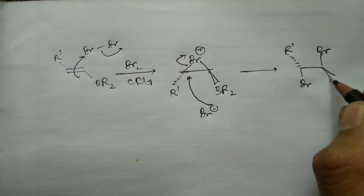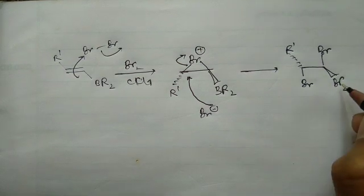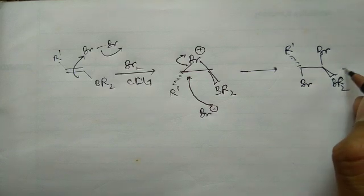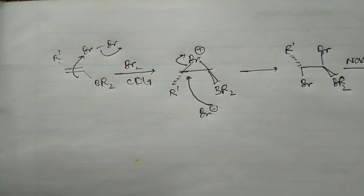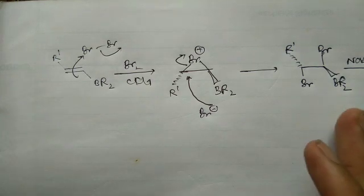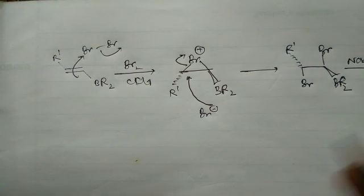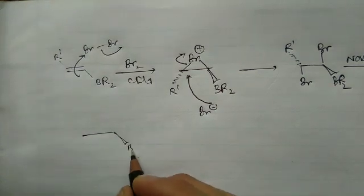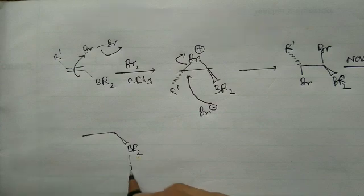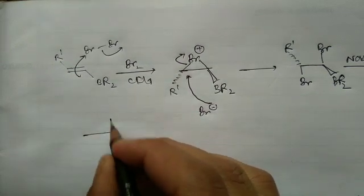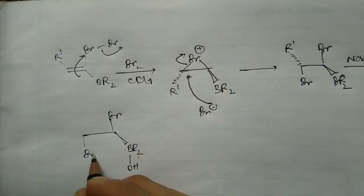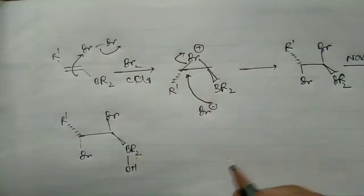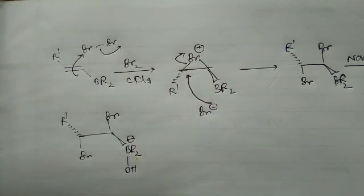After the bromonium ion opening, you have bromine on the carbon, another bromine from the original Br2, and the R' group. In the next step, NaOH is added. The OH minus attacks on the boron center, giving a B-OH species with a negative charge, with bromine and R' on adjacent carbons.